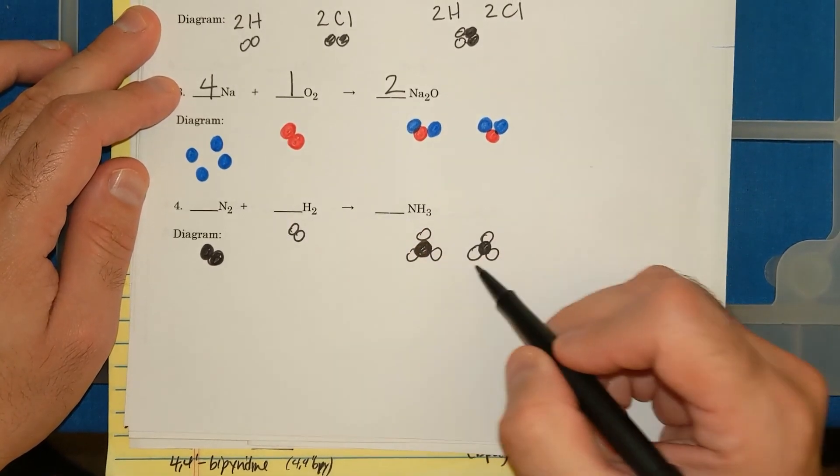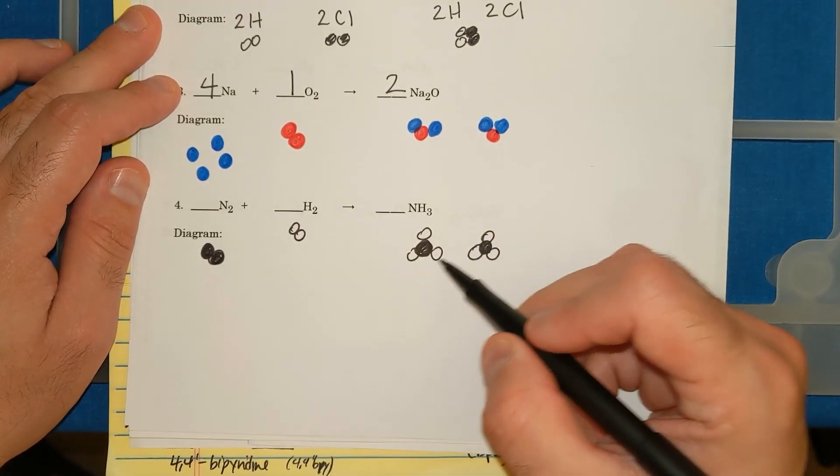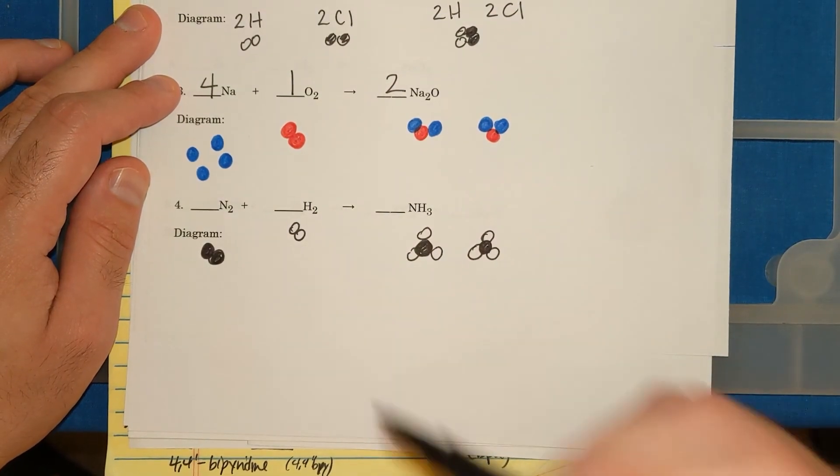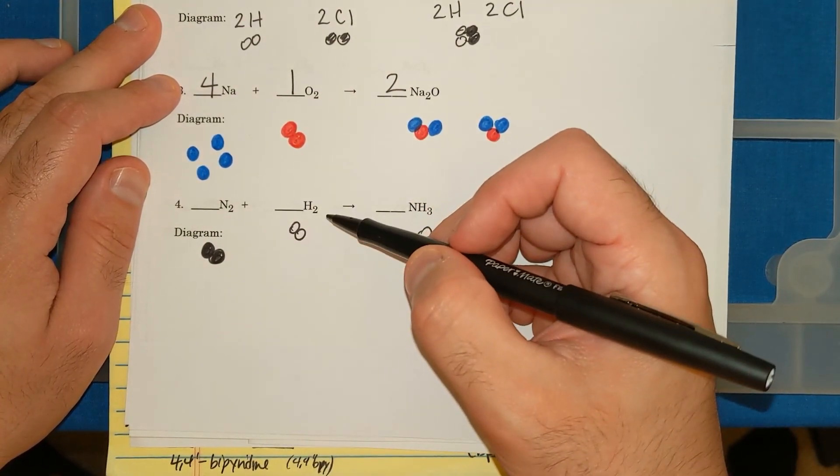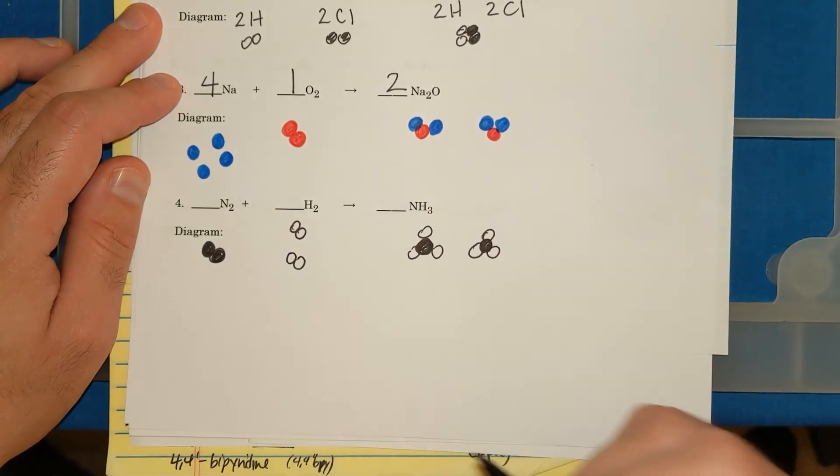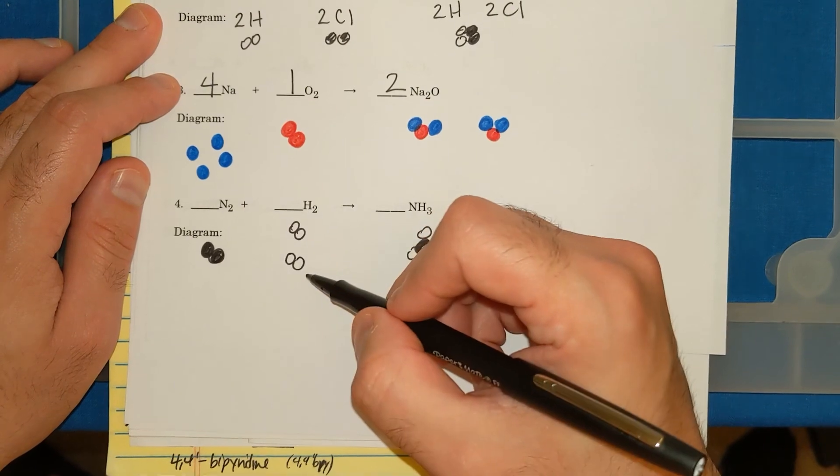I have 2 H's here, but 1, 2, 3, 4, 5, 6 H's over here. The only way that I could add H's is by adding H2. Let me see what happens if I add another H2. Well, right now I have 1, 2, 3, 4.